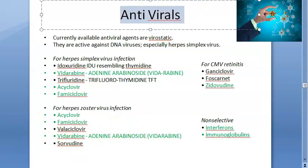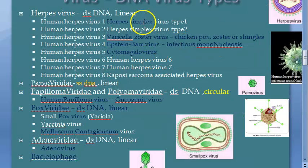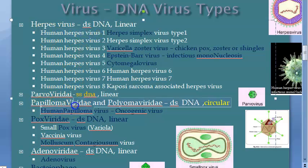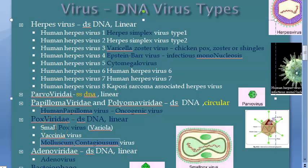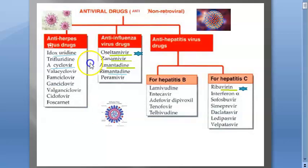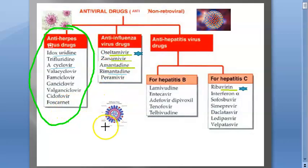To summarize: non-selective agents are interferons and immunoglobulins. Recall from the DNA virus classification that herpes, HPV, cytomegalovirus, and molluscum contagiosum are all DNA viruses. That is why the same types of drugs — mostly anti-herpes drugs — are used across these conditions. If an RNA virus attacks the eye, such infections are not as commonly expected.